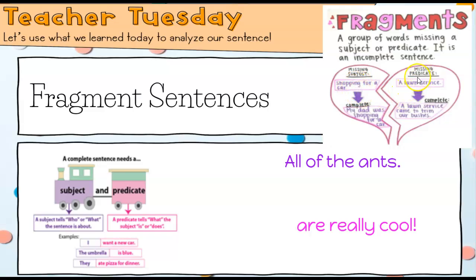Over here this is missing the predicate. A lawn service. Well what does the lawn service do? Let's see what they decided on here for complete sentences. A lawn service came to trim our bushes. Oh what did they do? Came to trim the bushes. Who was it about? A lawn service. So this sentence here has a subject and a predicate and it means it's complete.